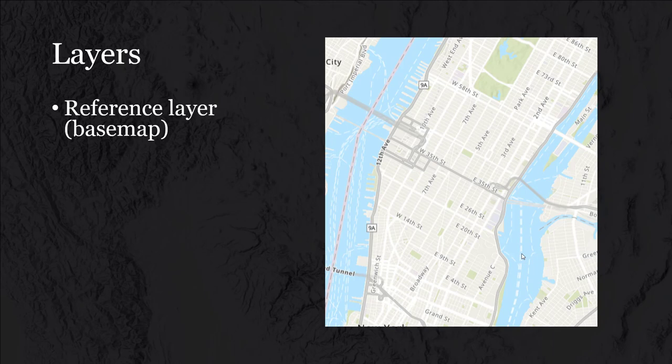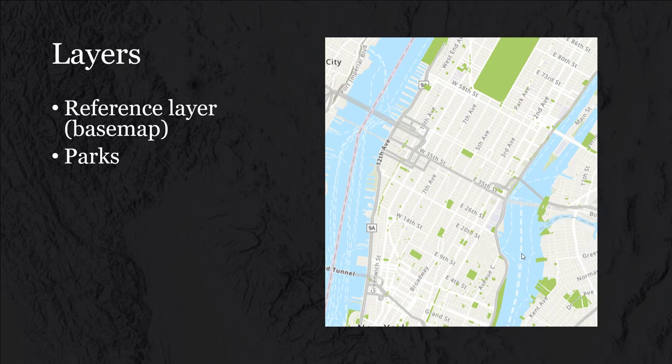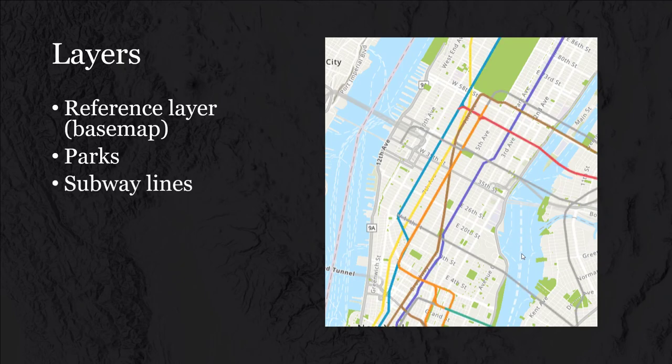We're starting with just a reference layer — many times called a base map. This is a base map of Manhattan, showing streets, water, and the general outlines of the landform. In the GIS, we can take additional data sets and start to drape them on top of this. The first one added is parks — where are parks located throughout this area of New York? Then subway lines — those colored lines moving throughout the city showing where subway lines are.